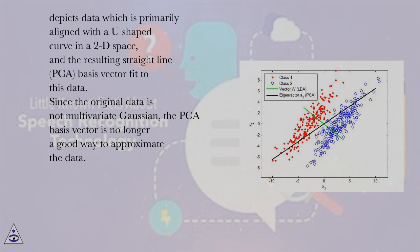Depicts data which is primarily aligned with a U-shaped curve in a 2D space and the resulting straight line PCA basis vector fit to this data. Since the original data is not multivariate Gaussian, the PCA basis vector is no longer a good way to approximate the data.